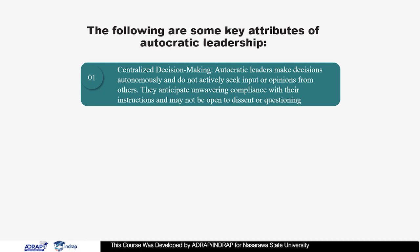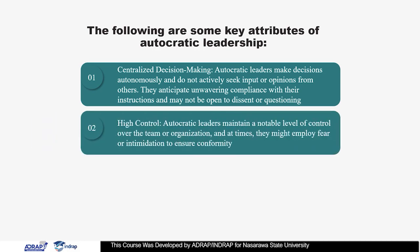Autocratic leaders make decisions autonomously and do not actively seek input or opinion from others. They anticipate unwavering compliance with their instructions and may not be open to dissent or questioning. Number two, high control: autocratic leaders maintain a notable level of control over the team or organization, and at times they may employ fear or intimidation to ensure conformity.